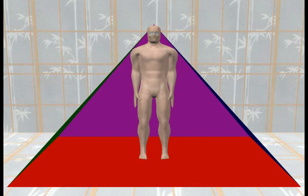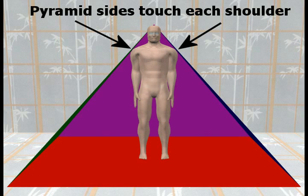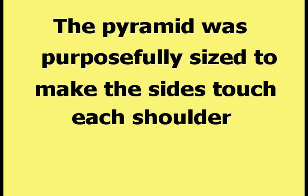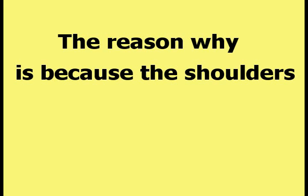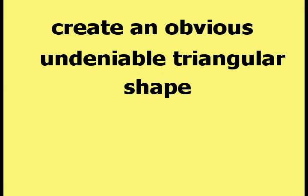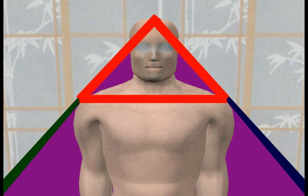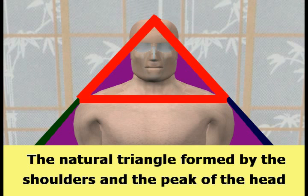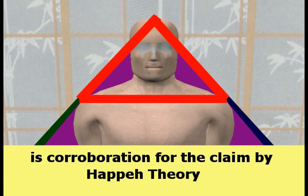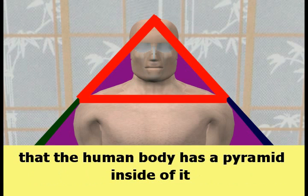This picture shows that the sides of the pyramid touch the shoulders as they run down to the ground. The pyramid was purposefully sized to make the sides touch each shoulder. The reason why is because the shoulders and the top of the head create an obvious, undeniable triangular shape, as shown in this picture. The natural triangle formed by the shoulders and the peak of the head is corroboration for the claim by Happy Theory that the human body has a pyramid inside of it.